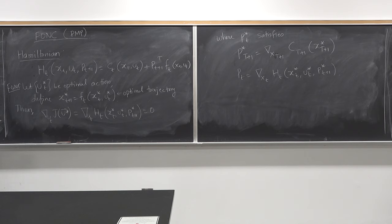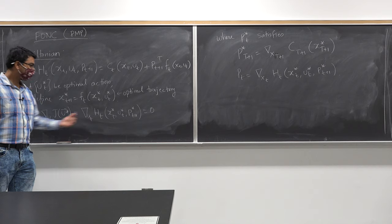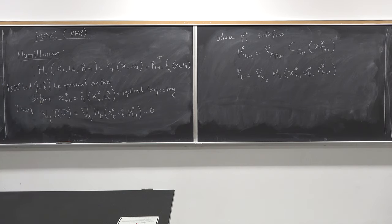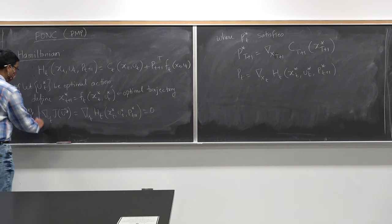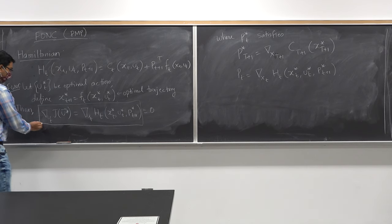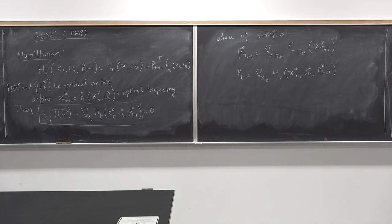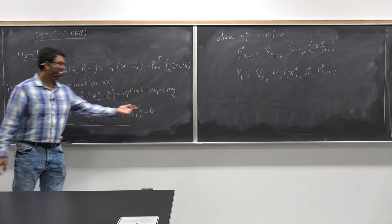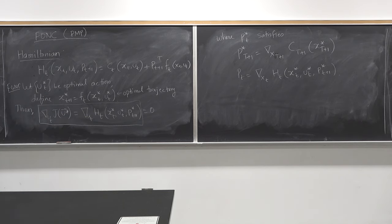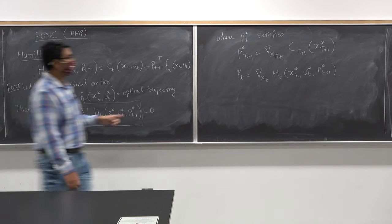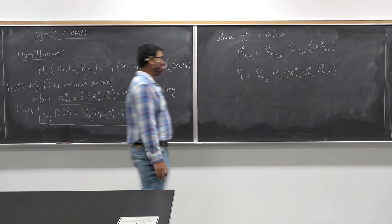The key thing to note is that the gradient of J with respect to u_t is the same as the gradient of the Hamiltonian with respect to u_t. This is what we computed in the previous class. The gradient of J with respect to u should equal zero, but because this equals the gradient of the Hamiltonian, we just require the gradient of the Hamiltonian to be zero. The update equation for the co-state vector can be given by the gradient of the Hamiltonian with respect to x_t.